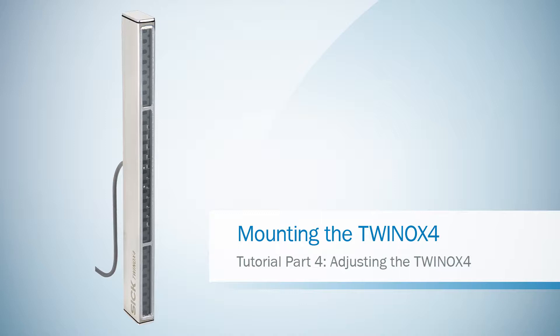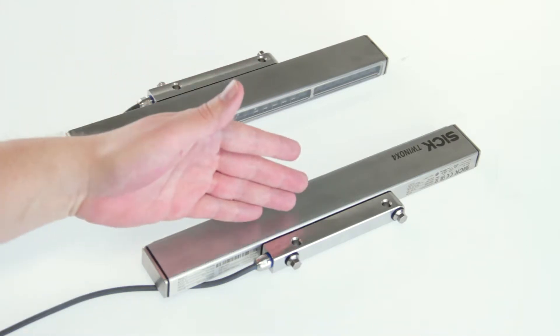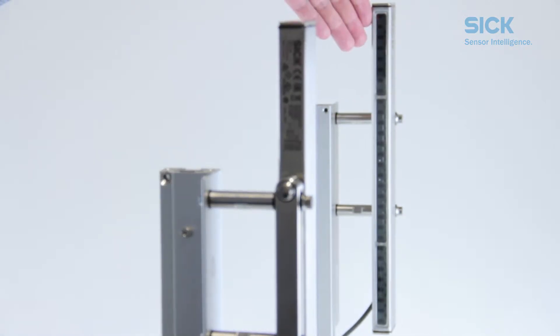After the TWINOX4 safety light curtain has been mounted and connected, the two twin sticks must be aligned with each other. This means that the beams of the sender optics must hit precisely the optics of the receiver unit.